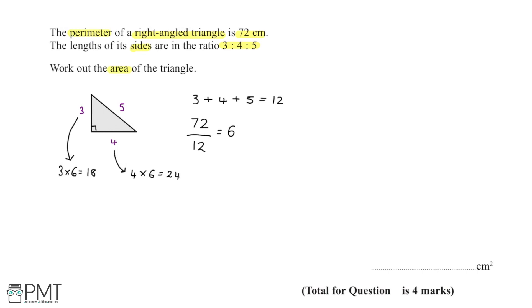To work out the area, I'll take 24, multiply it by 18, and divide by 2. This gives an answer of 216.